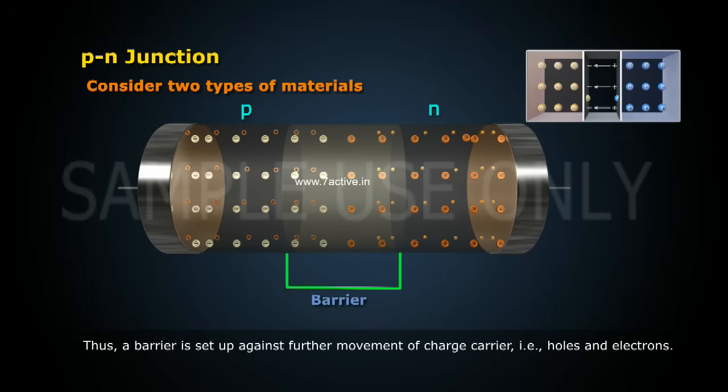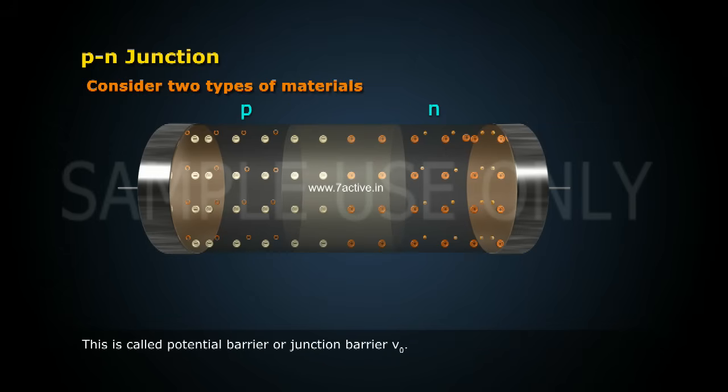Thus, a barrier is set up against further movement of charge carriers, that is, holes and electrons. This is called the potential barrier or junction barrier, V₀.